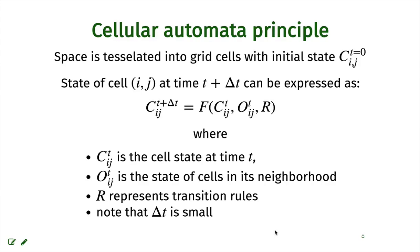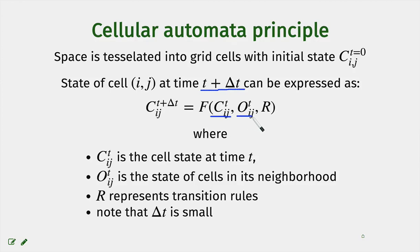In cellular automata, the space is tessellated into grid cells — that's what the name of this approach indicates. At the very beginning, these grid cells are given some initial state. The evolution at time t plus delta t can be expressed as a function of the cell state at the previous time step and the cell state of the cells in its neighborhood. The transition is based on some rules, and importantly, the time step is small.